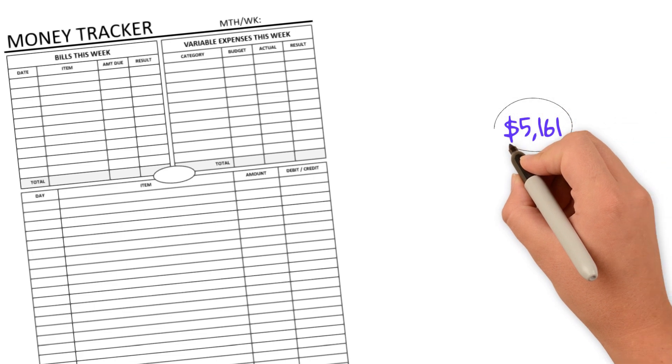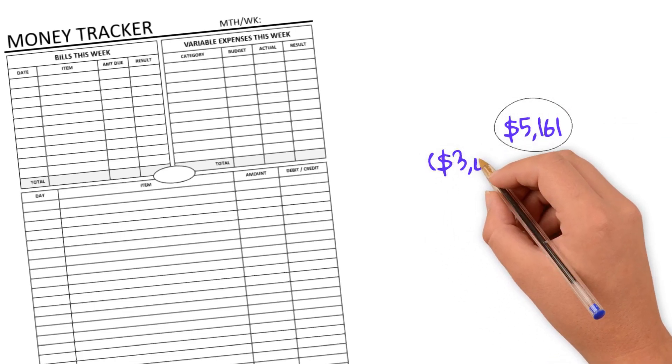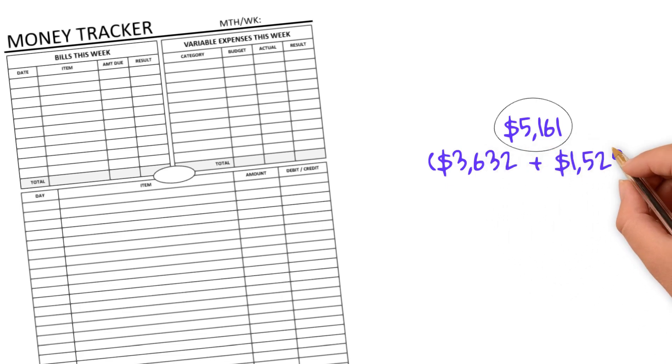It should work. So $5,161 fixed expenses of $3,632 leaves $1,529 for variables. This is less than the $1,823 spent during our analysis of our pattern of spending behavior for that month of March. But if I'm tracking it, I think I can reach that $1,529 goal.